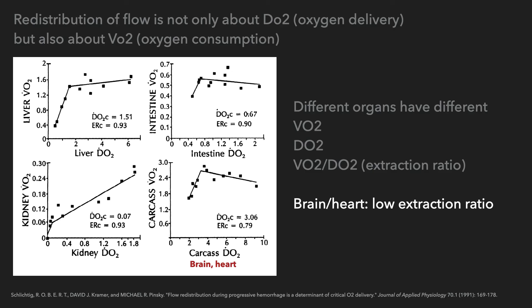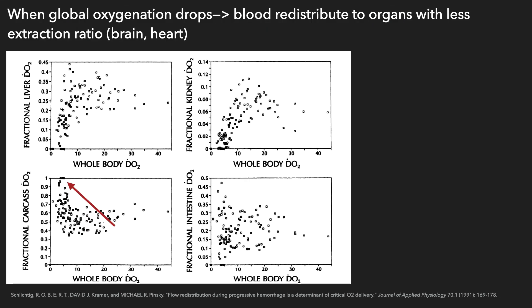Not only do different organs have different alpha receptor densities in their arterial trees, but different organs also have different capabilities of oxygen delivery, oxygen consumption, and oxygen extraction ratio. The brain and heart, although they require a lot of oxygen, have a relatively low oxygen extraction ratio. When global oxygenation drops, there is blood redistribution toward organs with a lower extraction ratio, like the brain and heart.